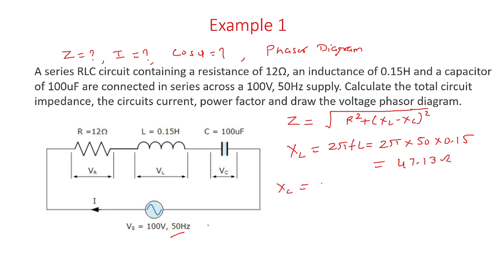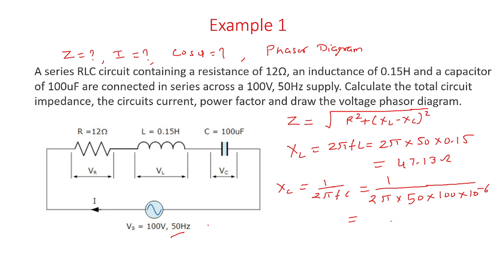Similarly, we can calculate Xc, which is 1 divided by 2πFC. Substituting the frequency of 50 hertz and capacitance of 100 microfarad, that is 100 × 10⁻⁶, we get Xc equal to 31.83 ohm. Now we have sufficient information for the calculation of impedance — we have the resistor, XL, and Xc.